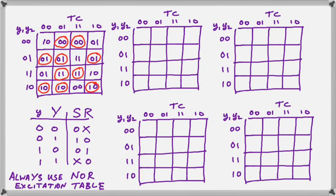So we always use the NOR excitation table, make sure that, and then we are going to proceed. Now we have to do one for S1 and R1 and one for S2 and R2.